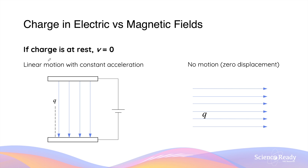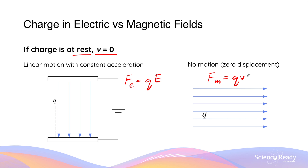If the charged particle is not moving, it will undergo linear motion with constant acceleration inside the electric field, because the electric force does not depend on the velocity of the charge. In contrast, inside a magnetic field, the magnetic force depends on QVB sinθ. If the charge is not moving, its velocity is zero, which results in a magnetic force of zero as well. This concludes the video on motion of a charged particle in electric versus magnetic fields.